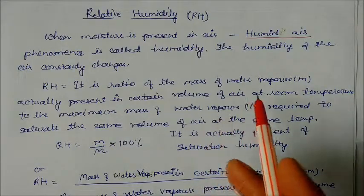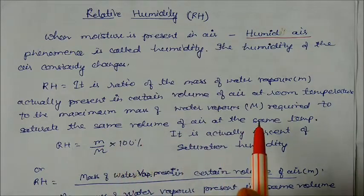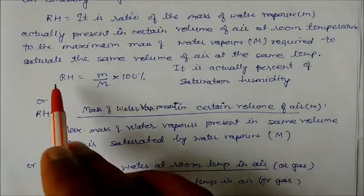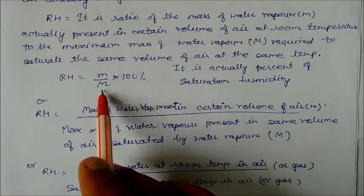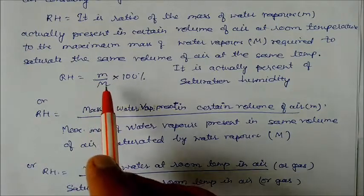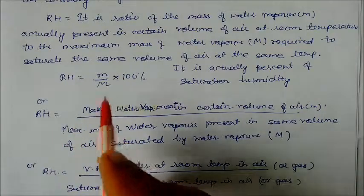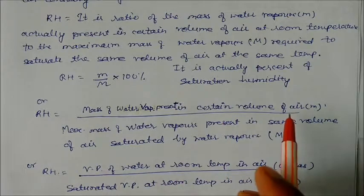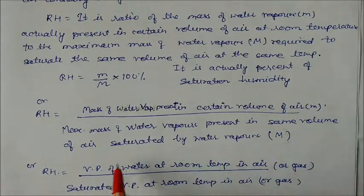We are comparing actual mass of water vapor to saturated mass of water vapor at the same temperature. One is the theoretical value, one is the actual value. Relative humidity is calculated as a percentage: RH = (m / M) × 100, where M is the theoretical maximum mass and m is the actual mass.